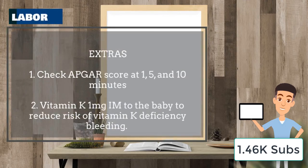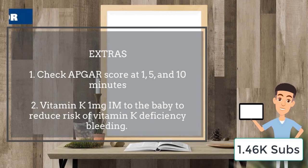As the child is born, check the APGAR score at least at one minute, five minutes, and ten minutes. Also administer vitamin K, one milligram intramuscularly to the baby, to reduce the risk of vitamin K deficiency bleeding.